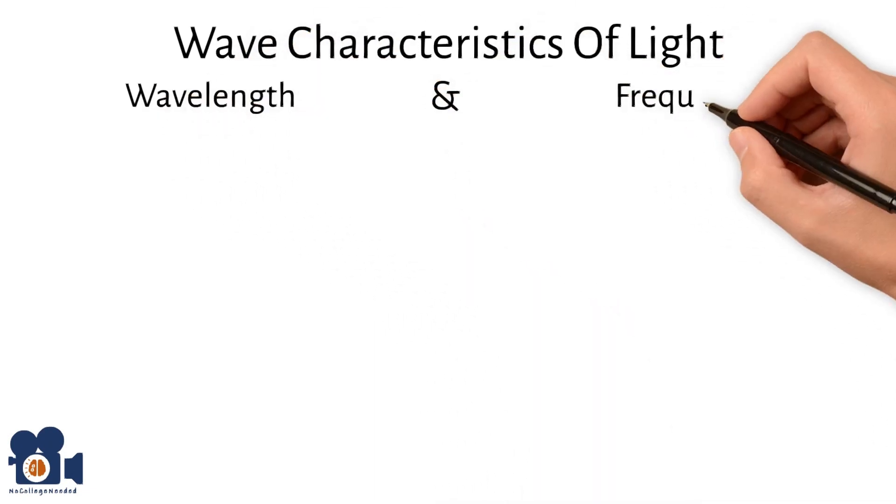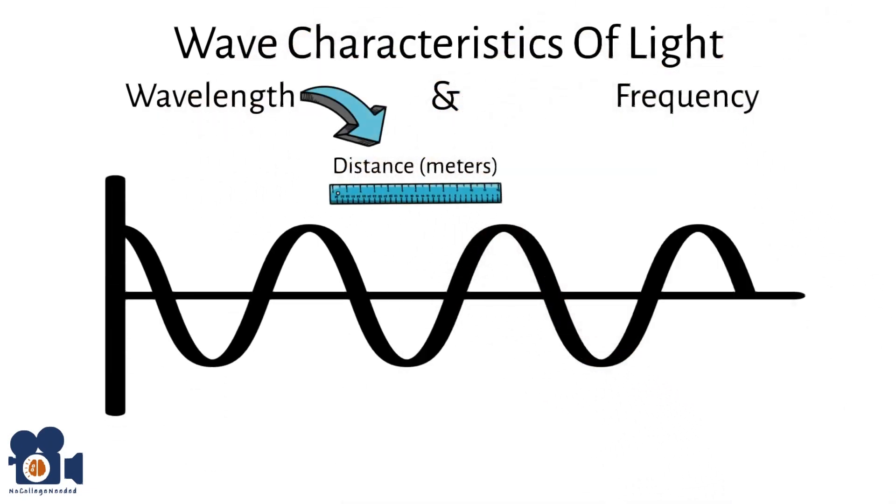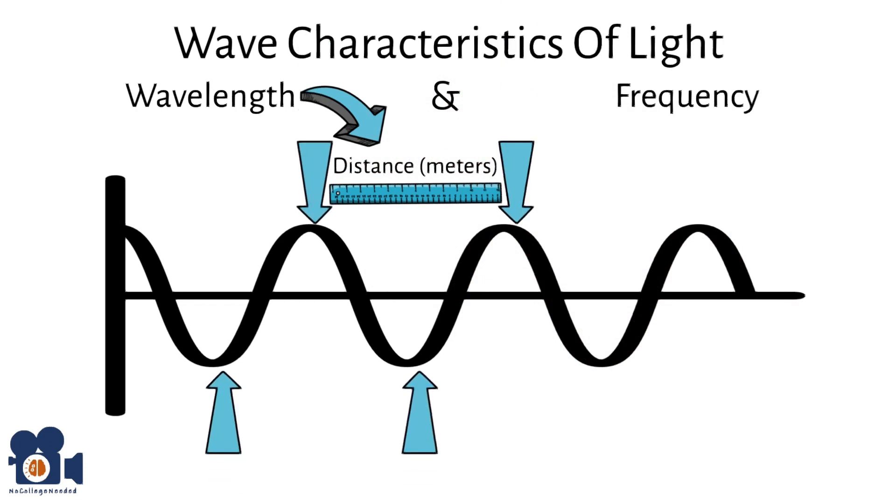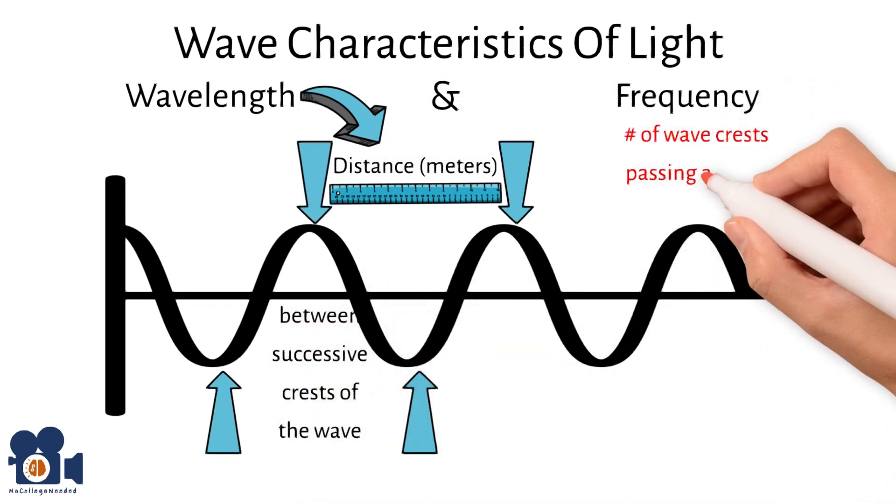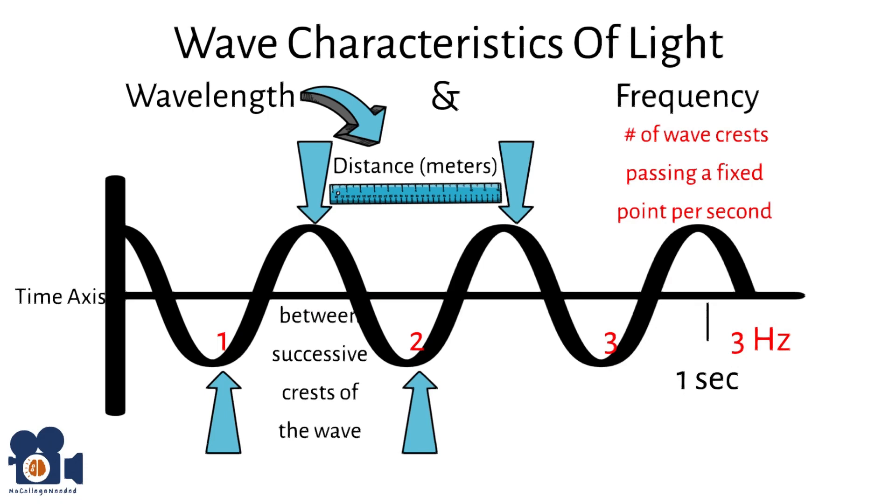Wavelength is the distance, usually measured in meters, between successive crests of the wave, and frequency is the number of wave crests passing a fixed point per second, which we give the SI unit Hertz. These properties are inversely related. As the frequency increases, the wavelength decreases.